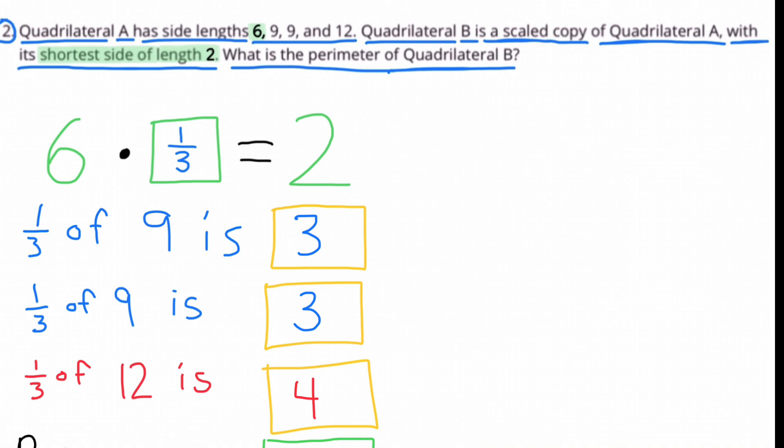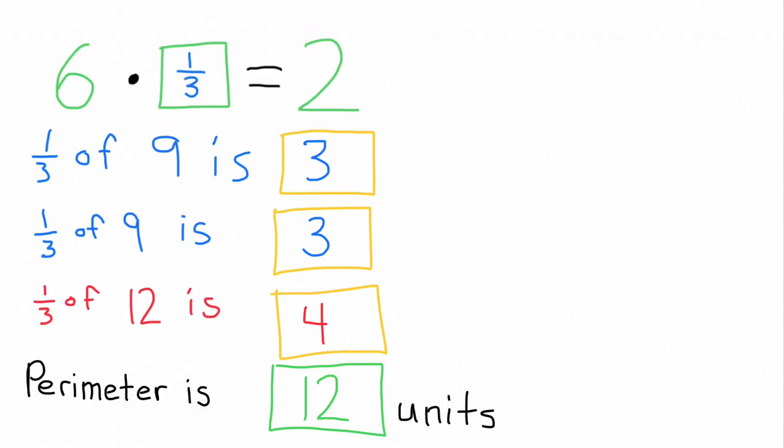1 third of 9 is 3, 1 third of 9 is 3, and 1 third of 12 is 4. Add up all these side lengths and the perimeter is 12 units.